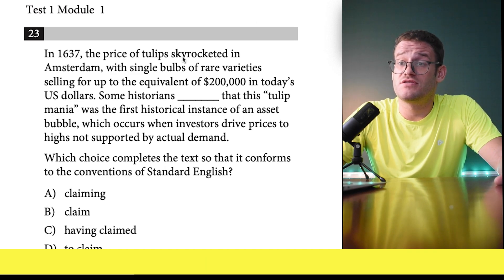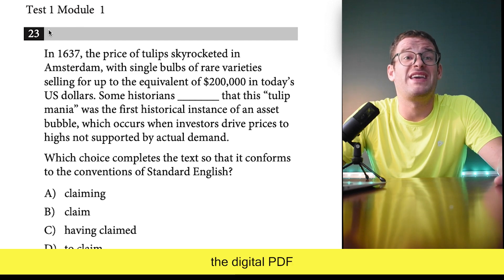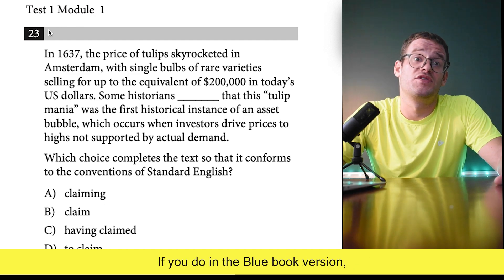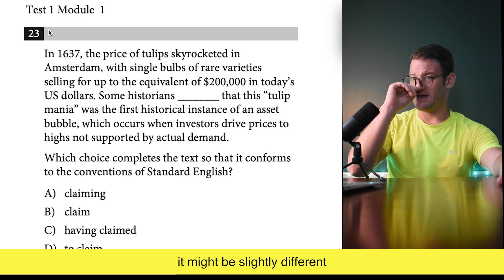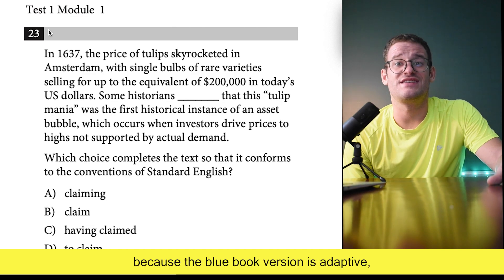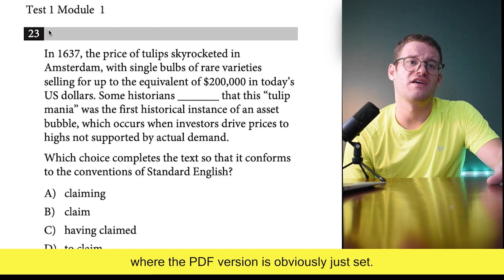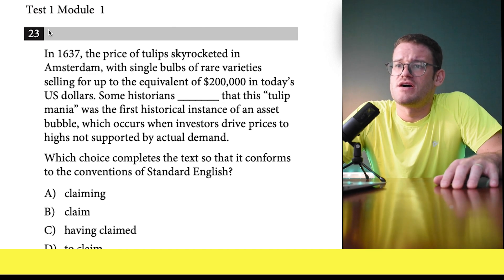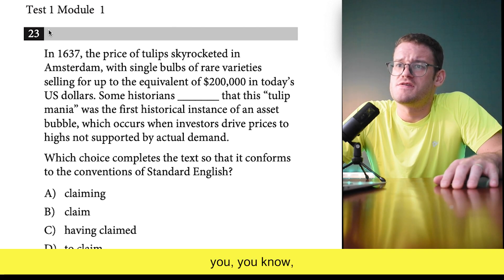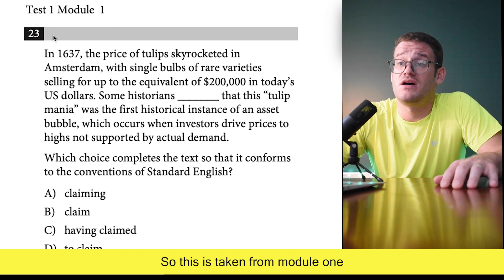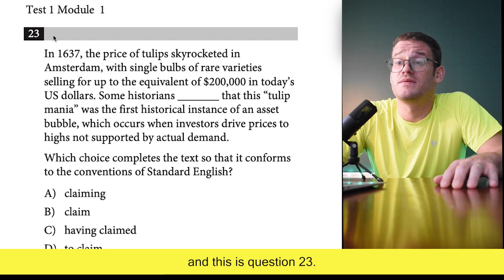Just a quick note: this is taken from the digital PDF version of test one from the College Board. If you're doing the Blue Book version it might be slightly different because the Blue Book version is adaptive, whereas the PDF version is set. So if you want to follow along at home, make sure you're using that PDF version. This is from module one, question 23.